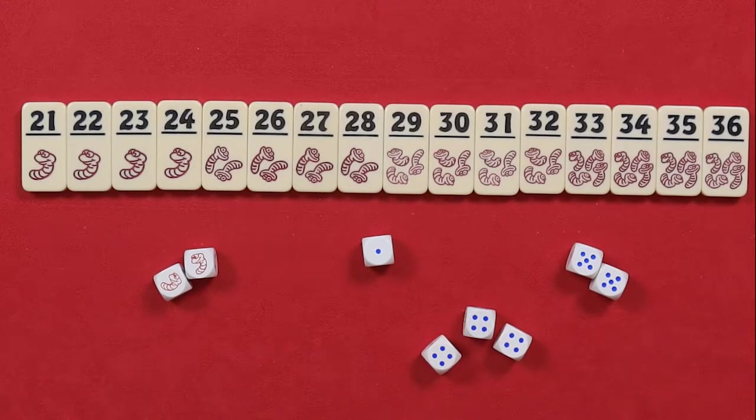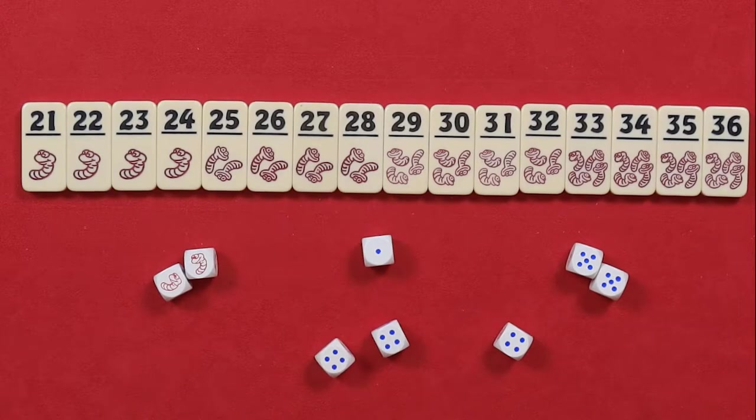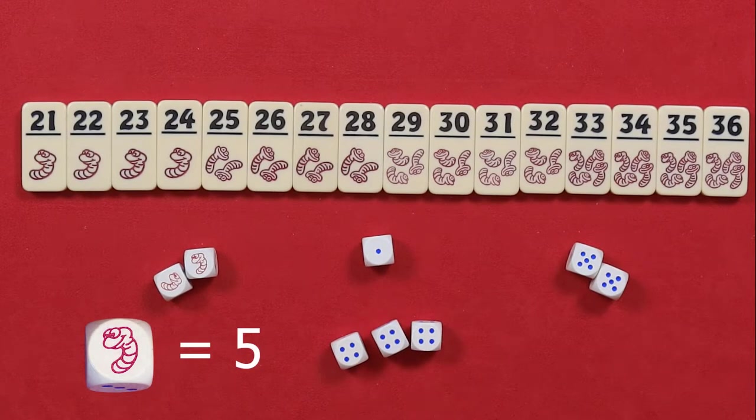For example, all the fours or maybe all the worms. You can never break up a group though. If there are three fours, you cannot just take one or two. You must take all of them. This goes for the worms as well. Which again, remember, are worth 5 each.